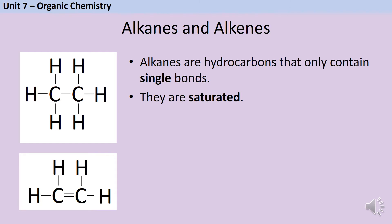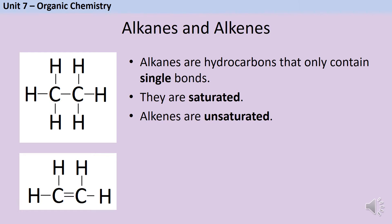Alkenes are not saturated. We say that they are unsaturated because not every carbon is bonded to as many different atoms as possible. In GCSE chemistry we only encounter unsaturated molecules that have a single double bond, although you should be aware that there are other molecules containing multiple double bonds or even triple bonds — we just won't be meeting them within GCSE chemistry.